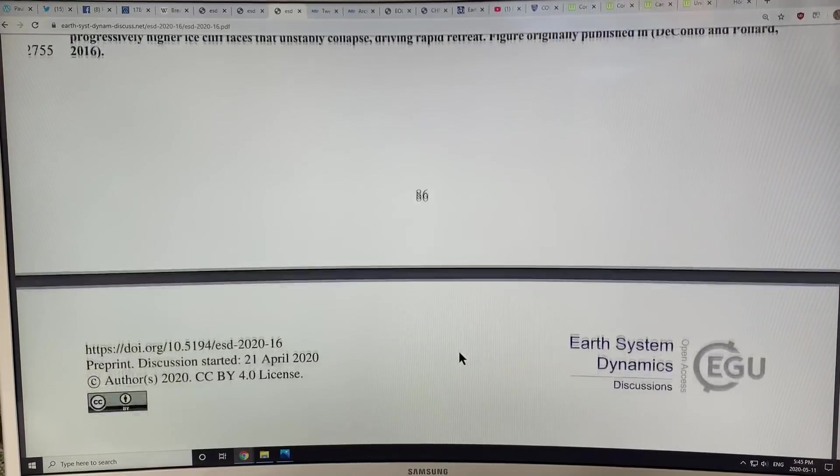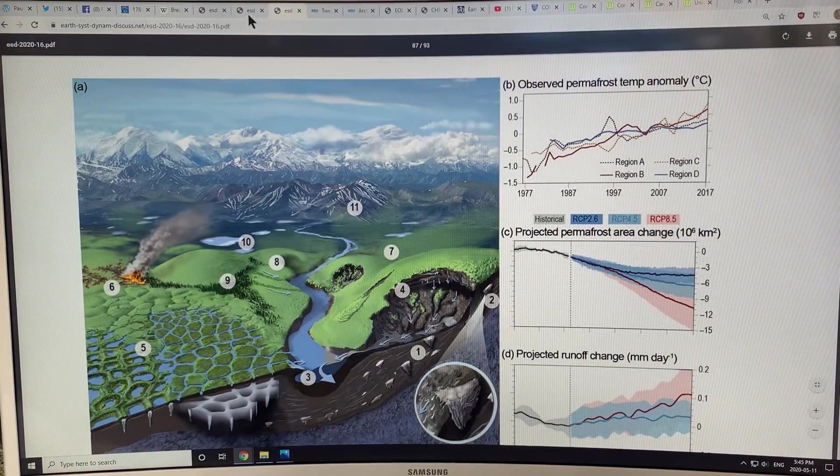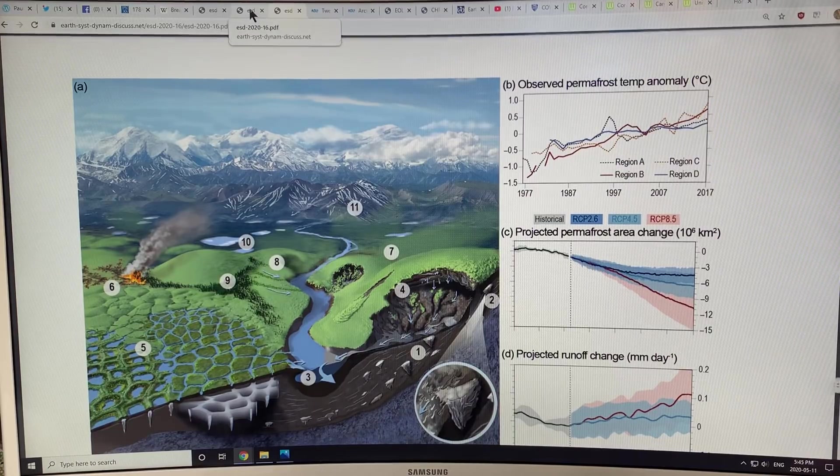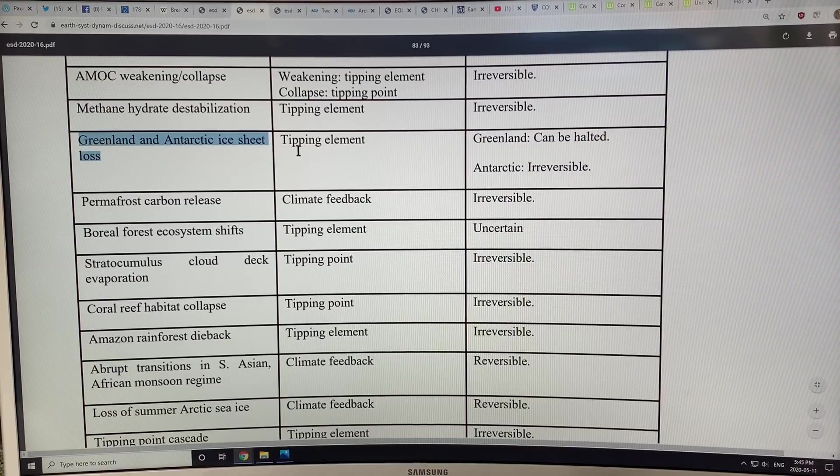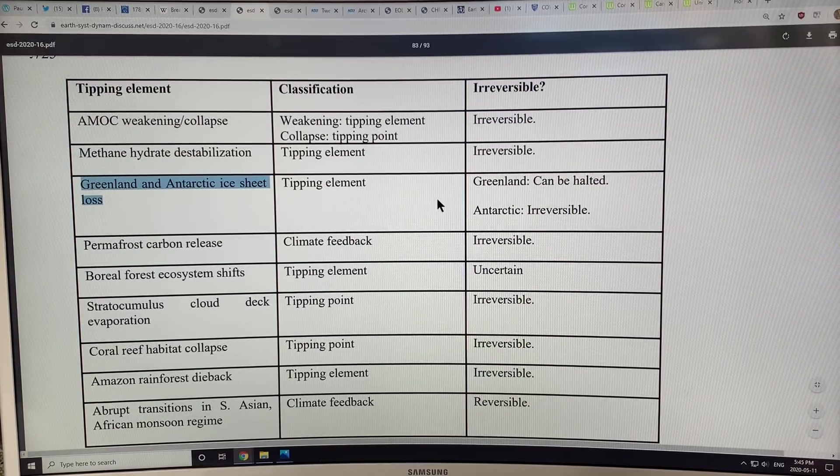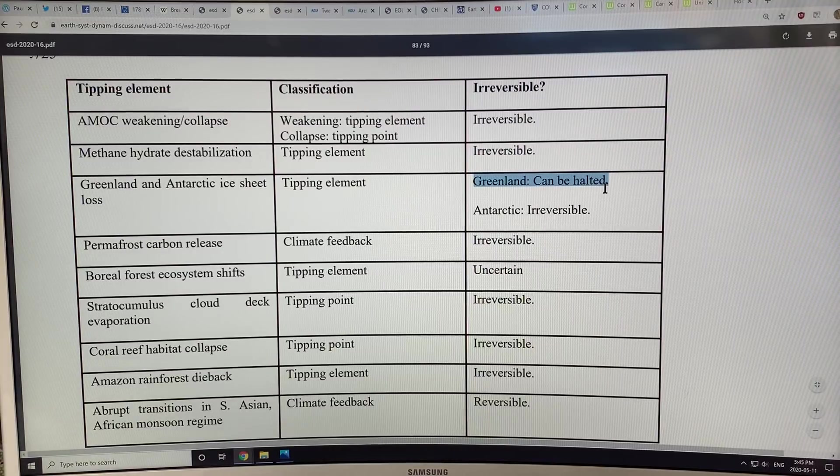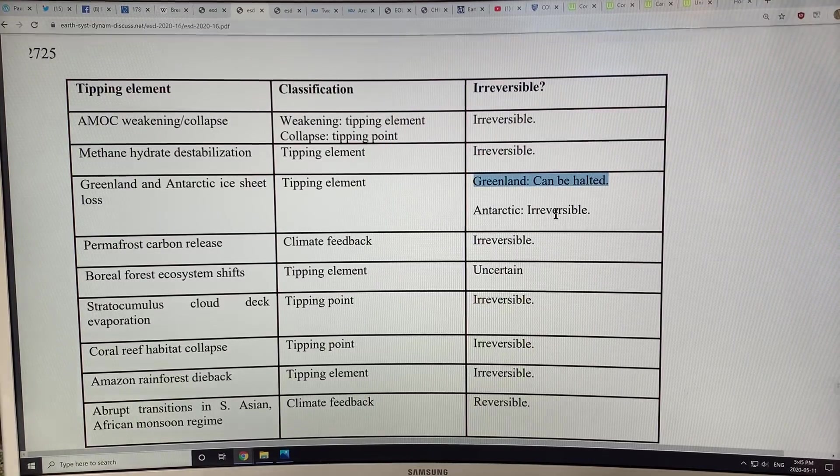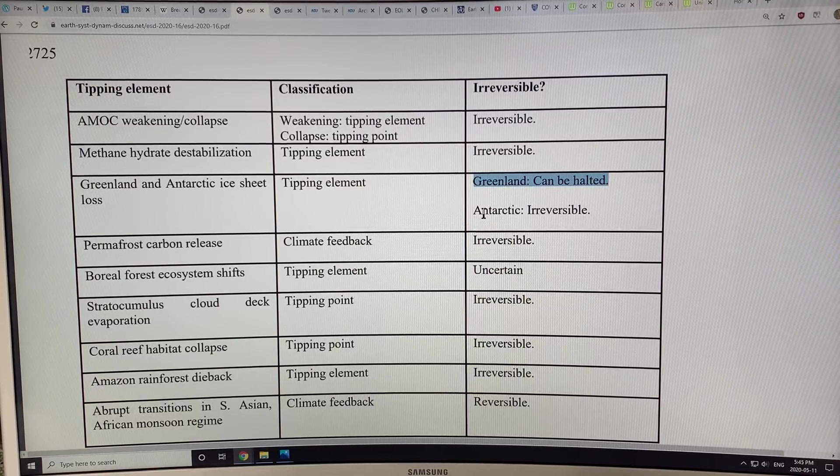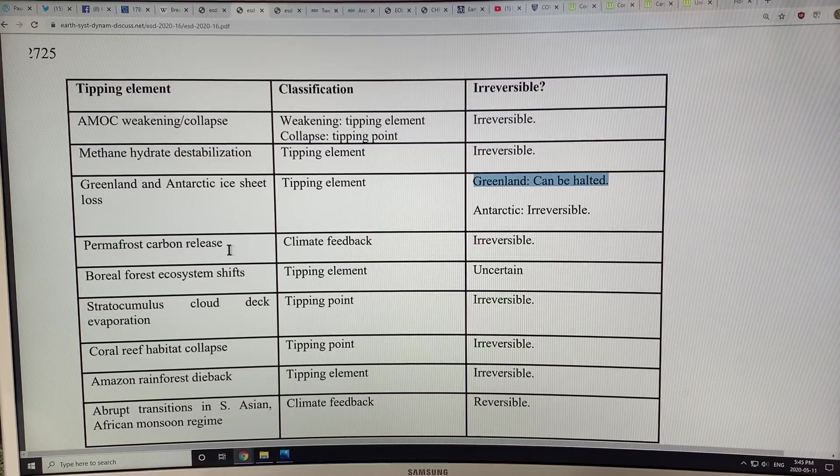This is causing huge instabilities in Greenland and Antarctica. Greenland and Antarctic ice sheet loss is a huge tipping element. It says Greenland can be halted if we were to cool the air above Greenland. Antarctic irreversible because it's basically the temperature of the ocean water that comes up underneath that causes the problem.